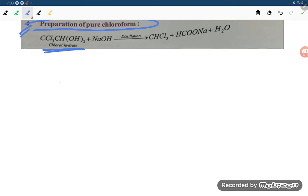What is the formula of chloral hydrate? It is CCl3-CH with double OH. In this reaction, what are we going to do? You are taking NaOH.